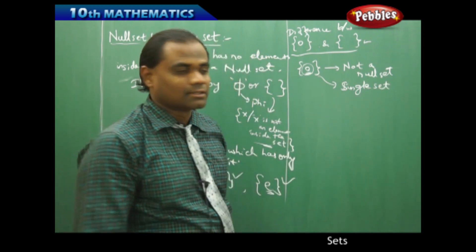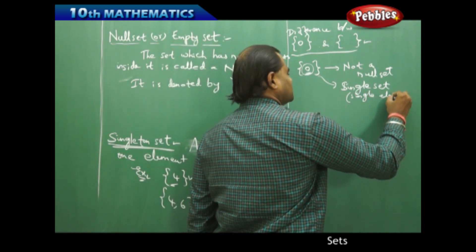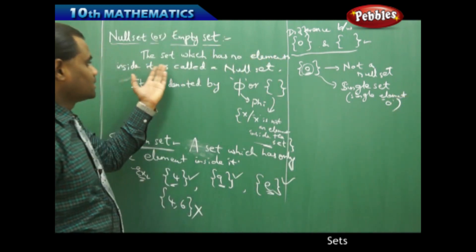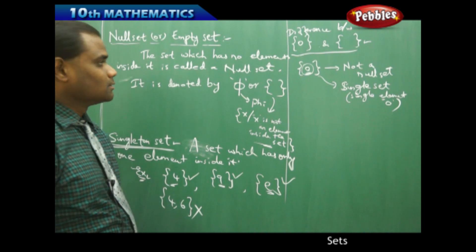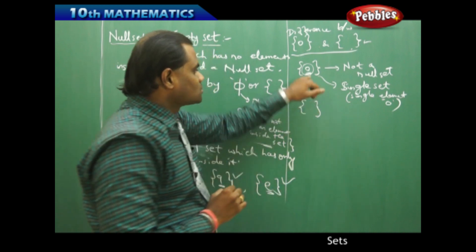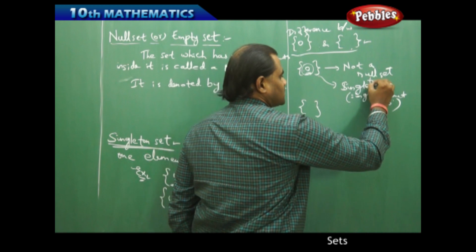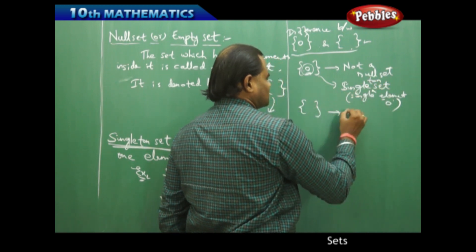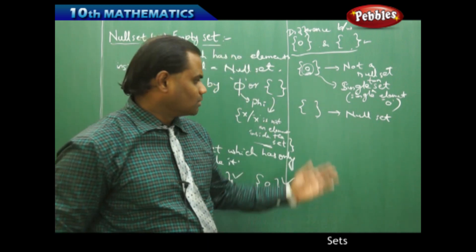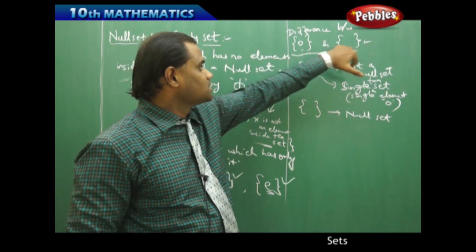The set {0} is a singleton set with the single element zero. Whereas the null set has no elements inside it — therefore {} or φ forms a null set. The set {0} does not form a null set because there is already one element, zero, inside it — so it is a singleton set. And {} cannot form a singleton set because there is no element inside it. This is how we differentiate between a singleton set and a null set.